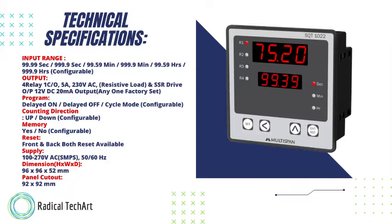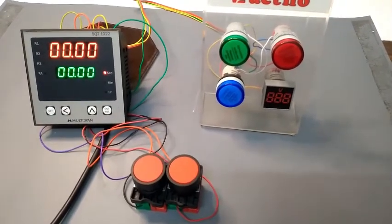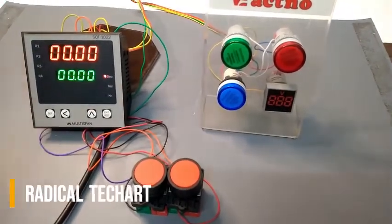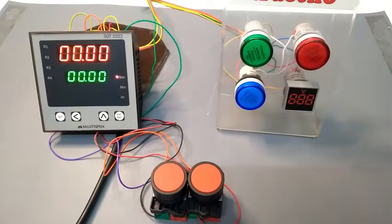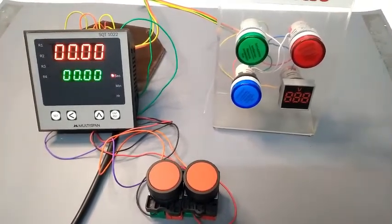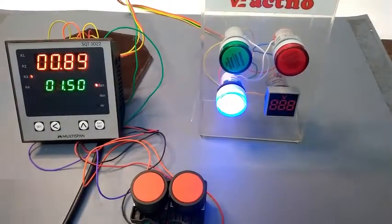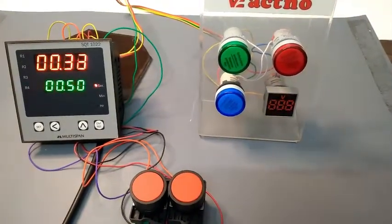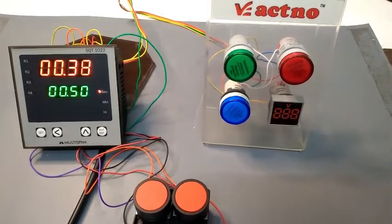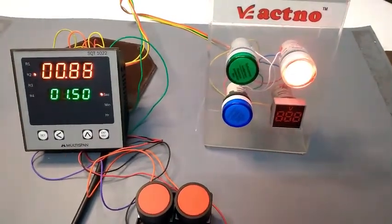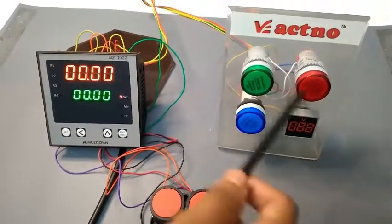So now let's look at this model's working. You can see here one setup with me — the sequential timer SQT1022. Now we will configure its working, as well as how we connect this and configure the programming of this timer setting. So follow this video. Now I start this and it will operate turn by turn. Here I put 4 relays. Now I stop — it will stop here. You can see the results.